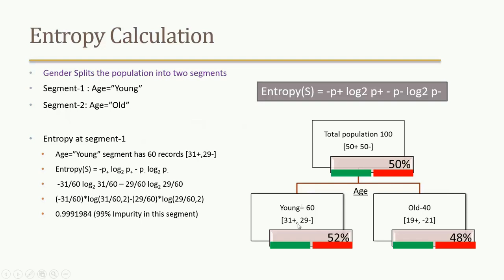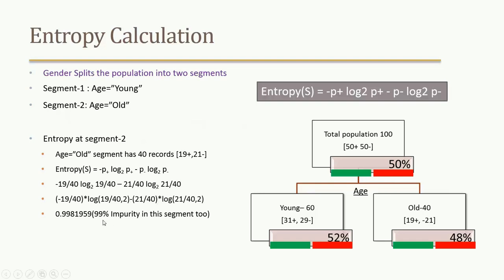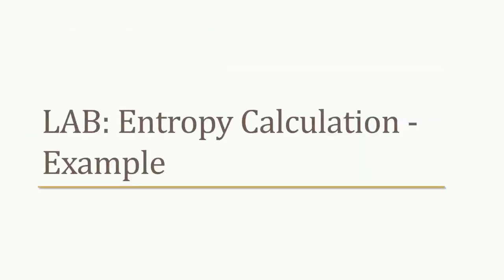Similarly, for the old segment with 40 records, 19 are positive and 21 are negative. Calculating entropy: (19/40) × log2(19/40) + (21/40) × log2(21/40) gives an entropy of approximately 99% impurity again — understandable because it's almost a 50/50 split. So both the young and old segments are impure, confirming age is not a good splitting variable.